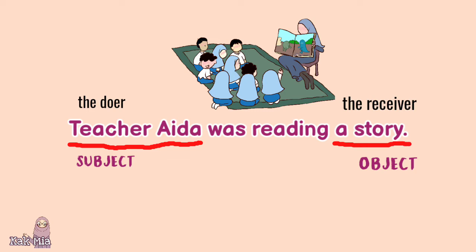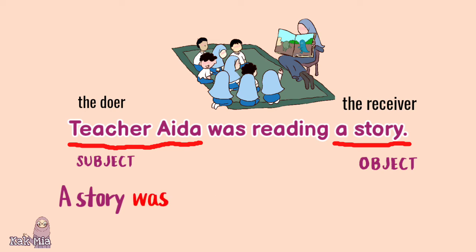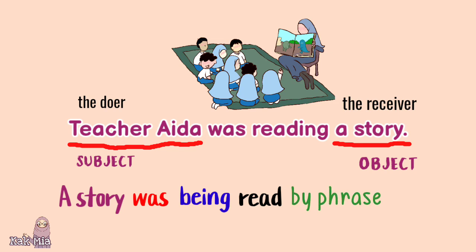Now let's change this sentence into its passive voice. Remember to start with the receiver: 'a story'. Then, 'was' or 'were'. A story is a singular form, so we have to use 'was'. Then just write down 'being'. Next, write down the past participle of the verb 'read' — it is 'read'. Finally, write down the by phrase: 'by Teacher Aida'.